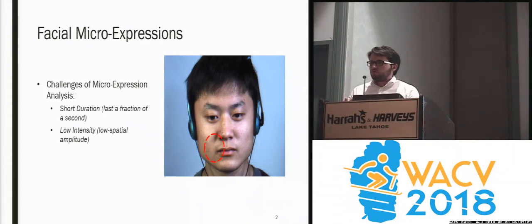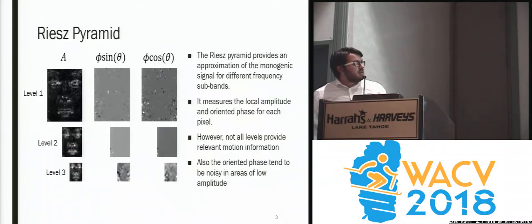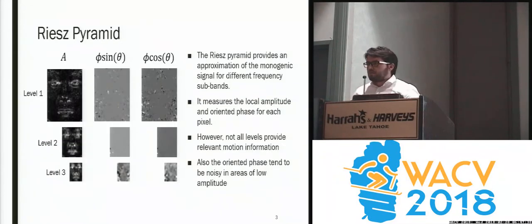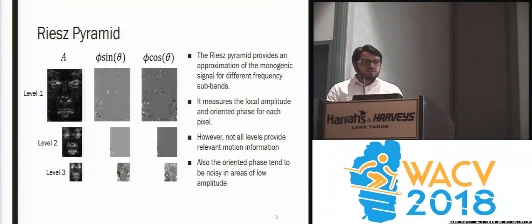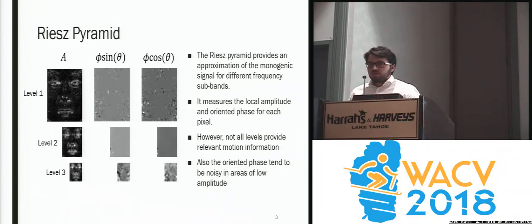What we are proposing is a method which is able to detect these emotions using the Riesz pyramid. The Riesz pyramid is a method that provides an approximation of the monogenic signal for differing frequency subbands. The good thing is that it allows us to get the local amplitude and the oriented phase for each pixel for different subbands. However, the problem is that not all levels of the pyramid will provide relevant information for micro expressions.